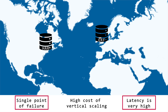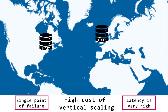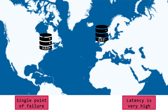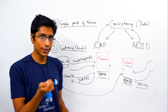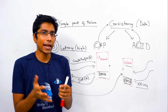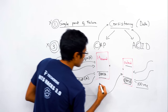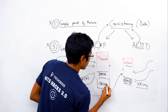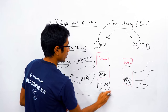Latency is still bad and single point of failure is still real. To reduce latency, we can cache some of the Oxford information right here in the Harvard server. Maybe there are some popular Oxford profiles that people want to see on Facebook — you can cache them here.